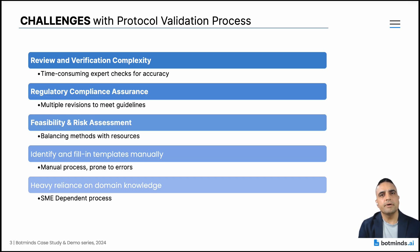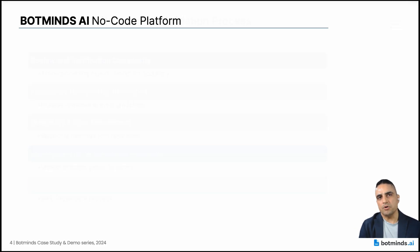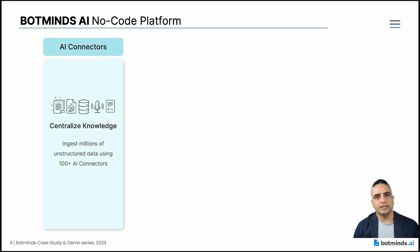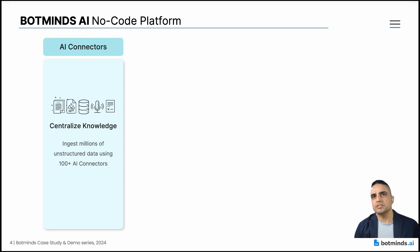Now let's take a look at what Botmines platform has to offer. There are three key pillars to the platform. The first is AI connectors. With AI connectors, we can bring in all kinds of data from any kind of source, be it mailbox, web, SharePoint, or cloud, and we process all structured documents. This includes scanned and handwritten documents, PDFs, JPEGs, and documents of any length.